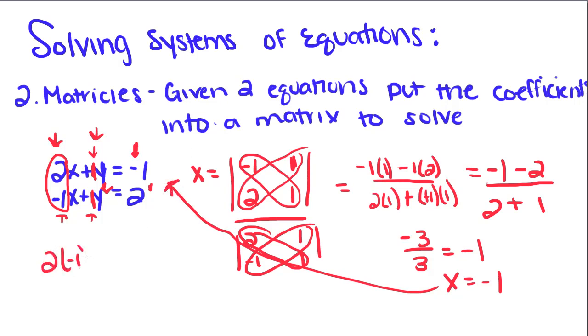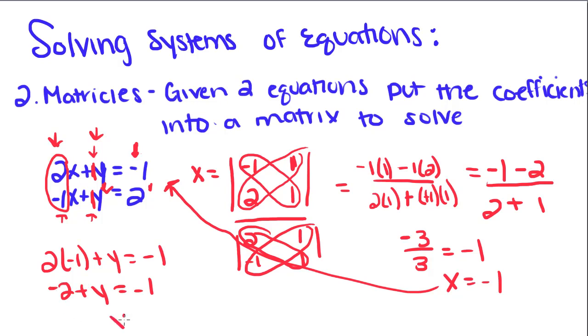Now we plug this x into the equation. So 2 times negative 1 plus y equals negative 1. Negative 2 plus y equals negative 1. Add the 2 over and you get y equals 1.